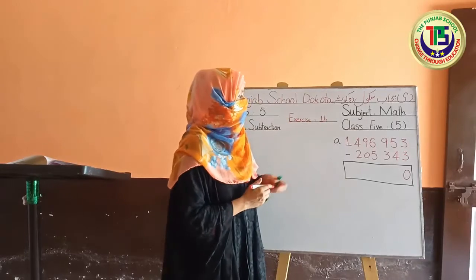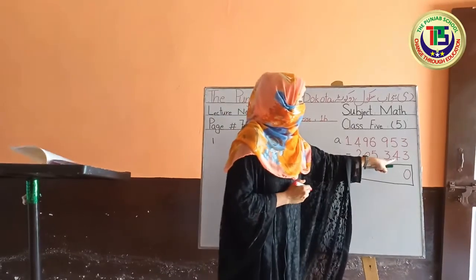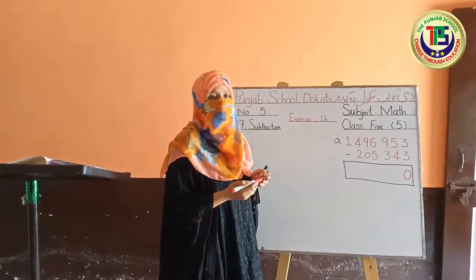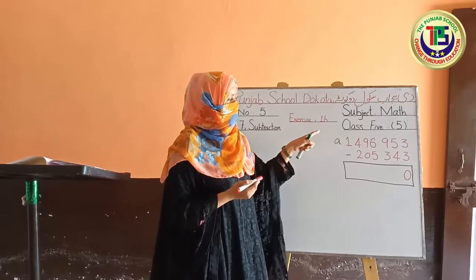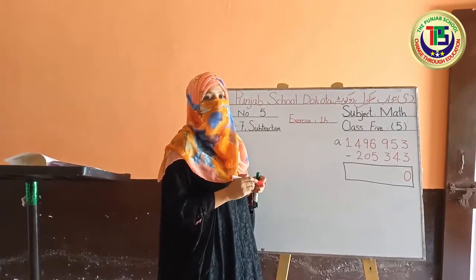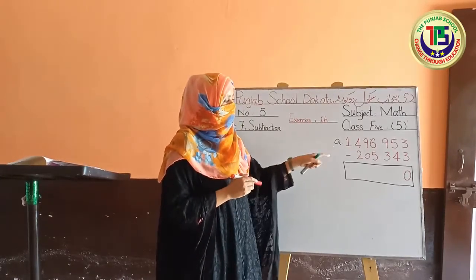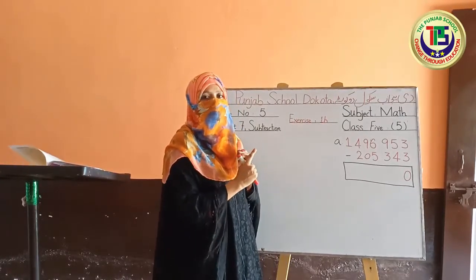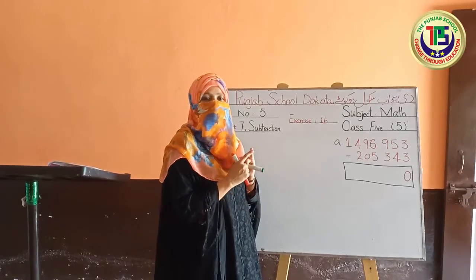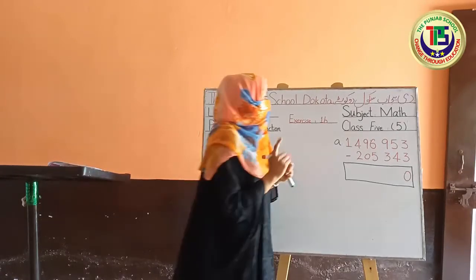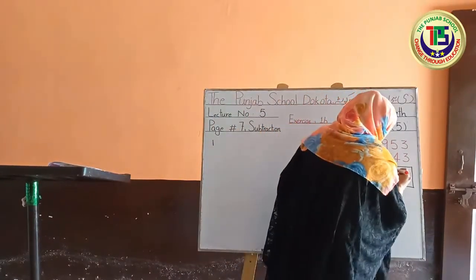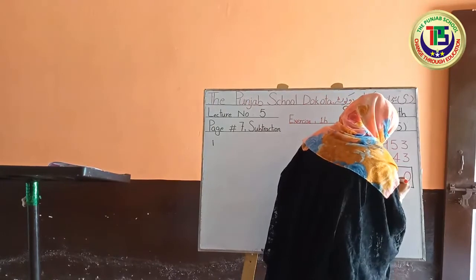The easy method is: start counting forward from the lower digit and stop when you reach the upper digit. For example, 4 minus something — after 4 comes 5, and the upper digit is also 5, so we stopped — the answer is 1. This way the difference gives us the answer.